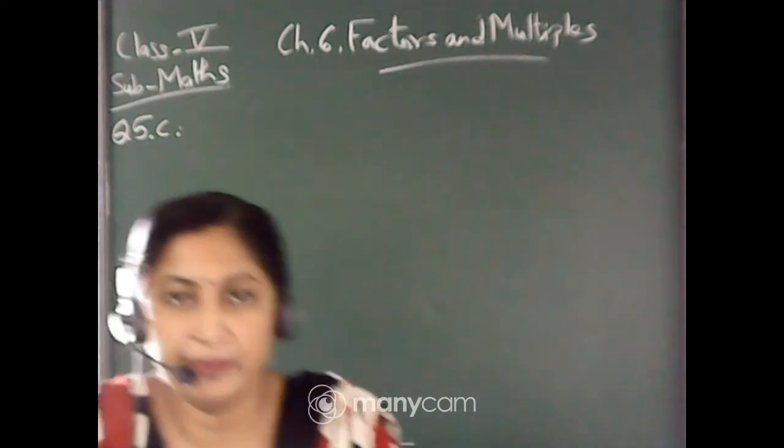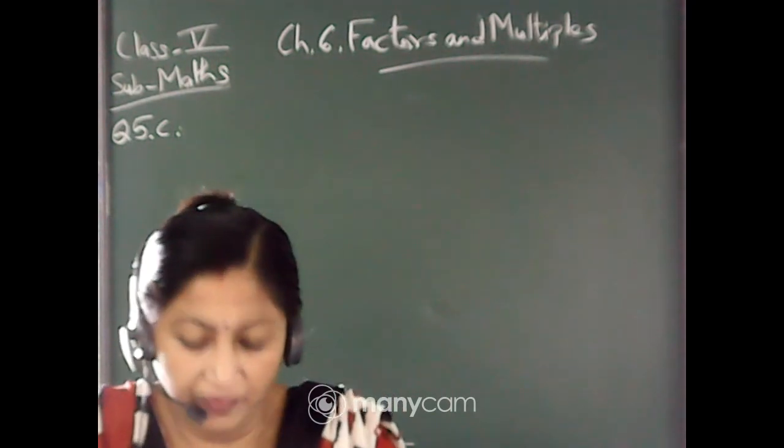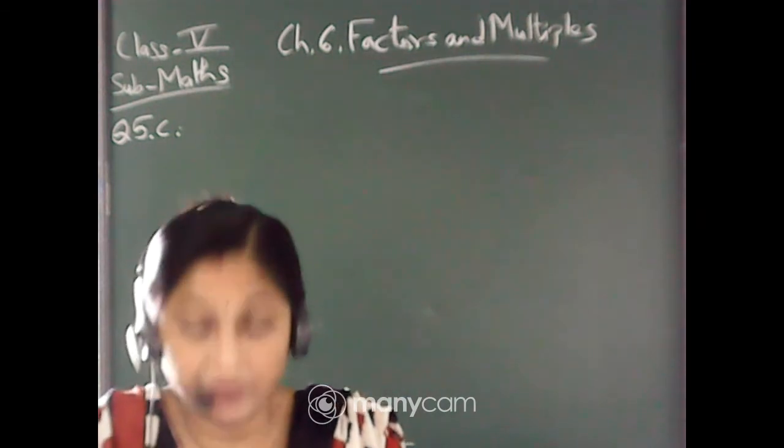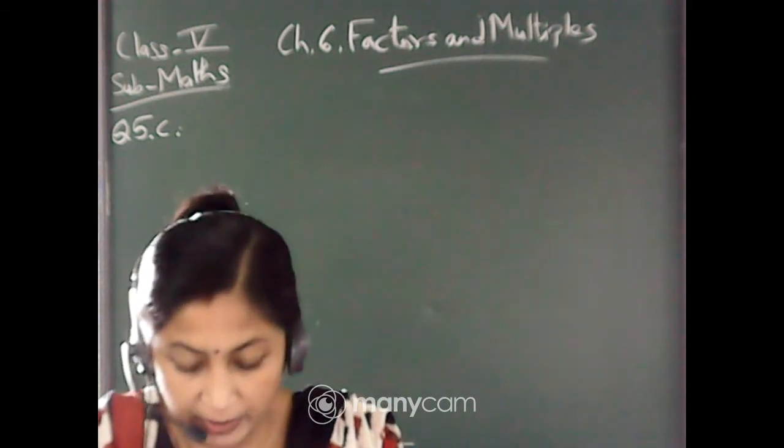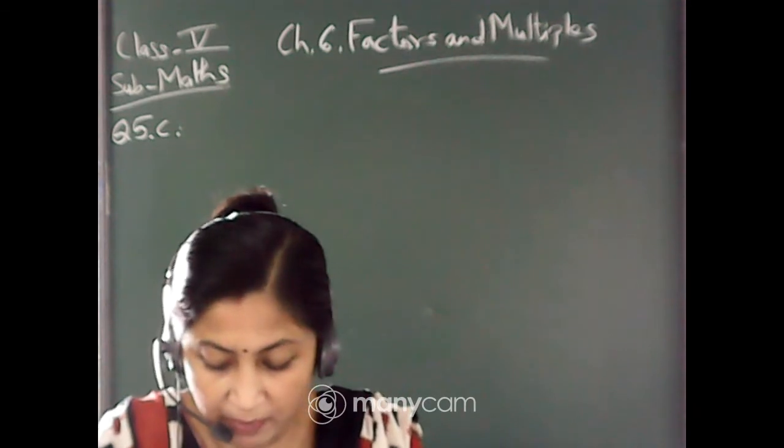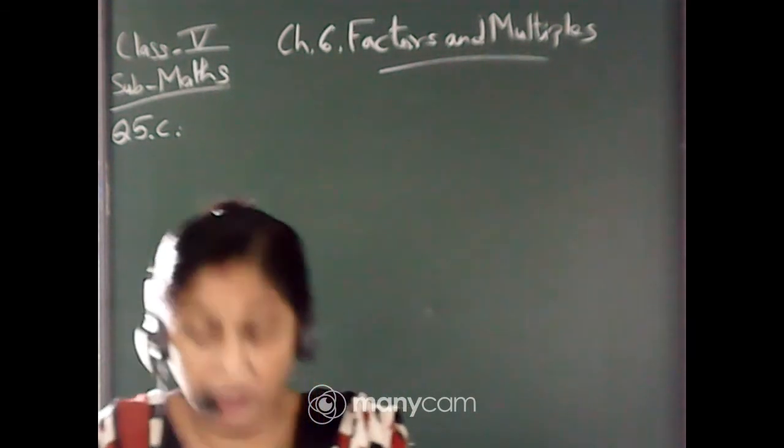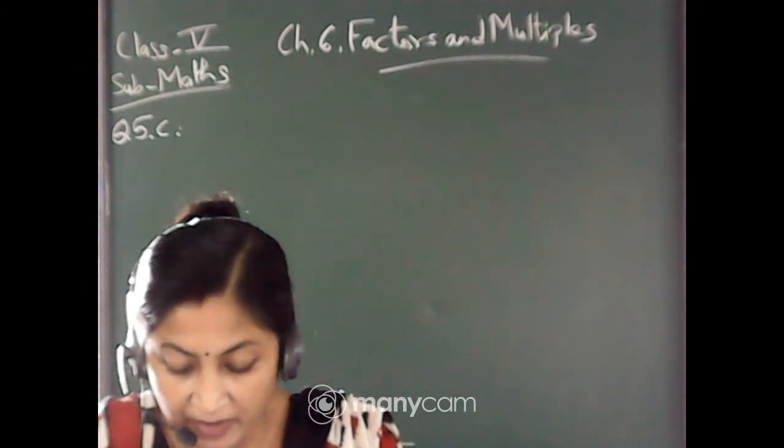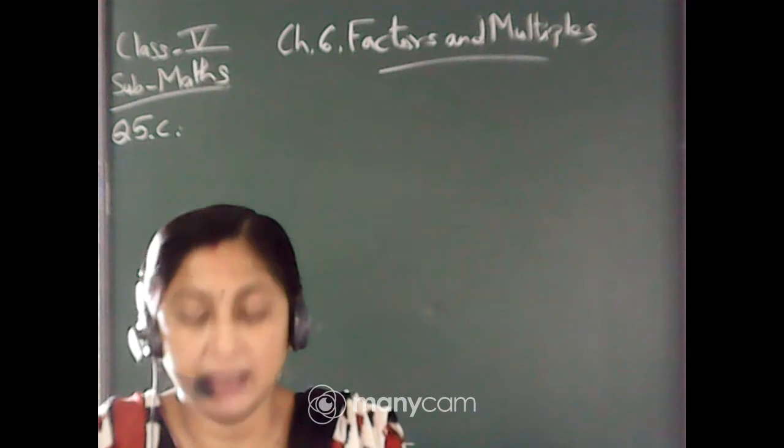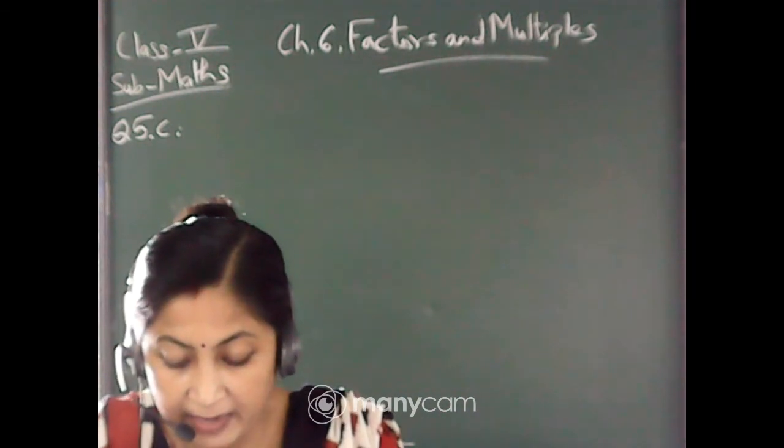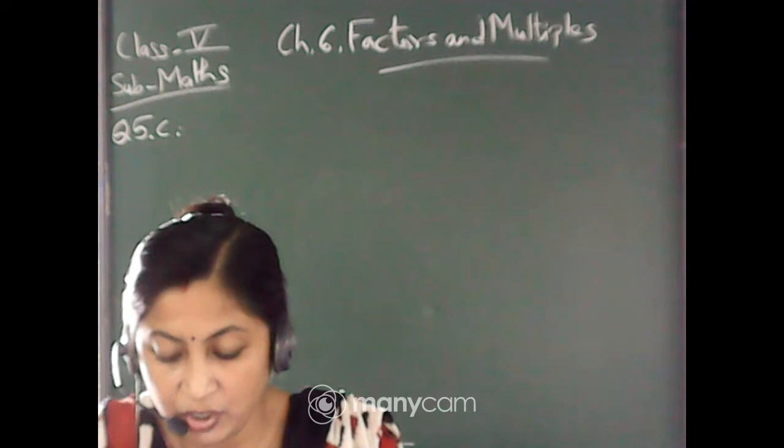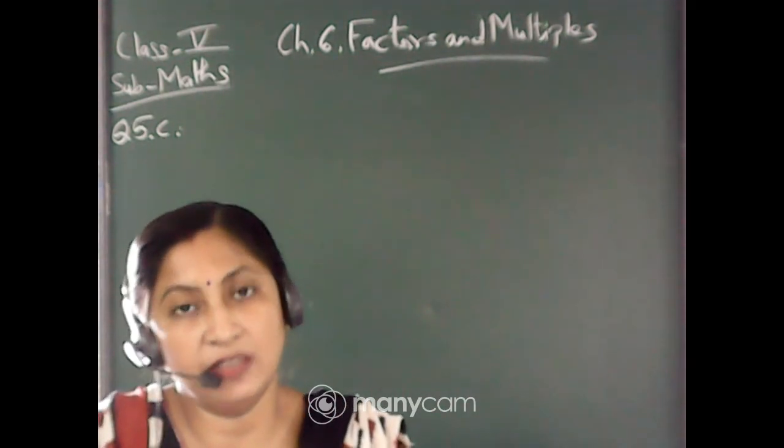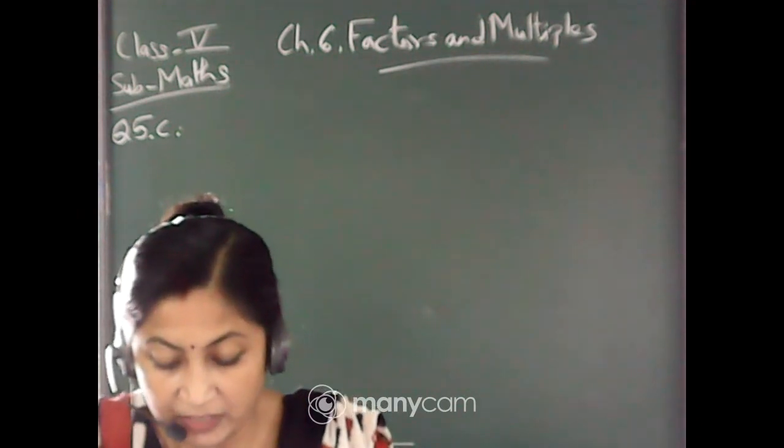Good morning class 5, welcome to the offline class. We are doing chapter number 6, factors and multiples. Up to question number 4 we have completed, and question number 5 of exercise 19. This is question number 5, find the HCF of the following numbers using division method. You have to find HCF but here the method is division.